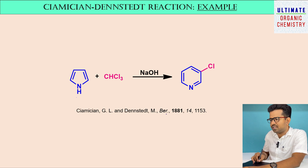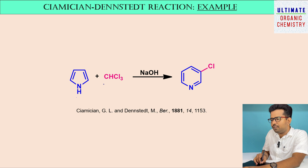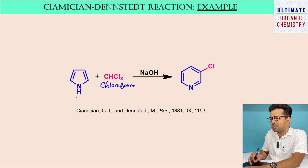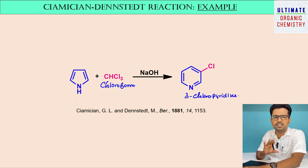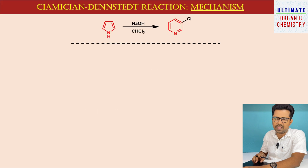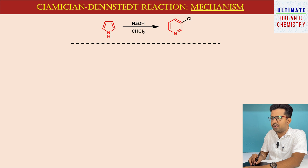This reaction was reported in 1881 by Ciamician and Dennstedt. As a general example, pyrrole is treated with chloroform in the presence of sodium hydroxide base to form 3-chloropyridine. Let me now discuss the mechanism of this Ciamician-Dennstedt Reaction. The general reaction is: pyrrole treated with sodium hydroxide along with chloroform to form 3-chloropyridine.